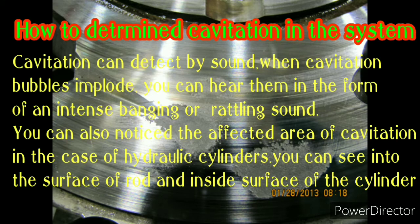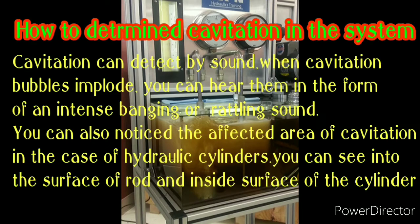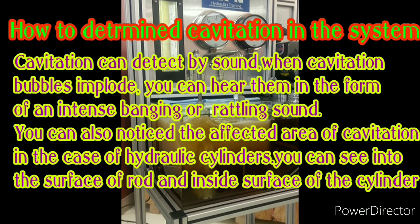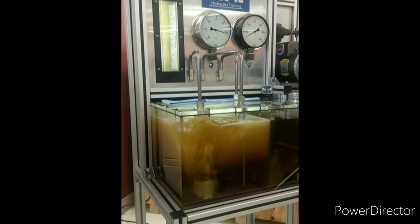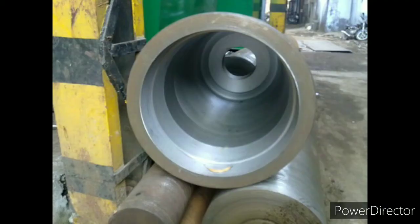Cavitation can be detected by sound. When cavitation bubbles implode, you can hear them in the form of an intense banging or rattling sound. You can also notice the affected area of cavitation — in the case of hydraulic cylinders, you can see damage on the surface of the rod and the inside surface of the cylinder.